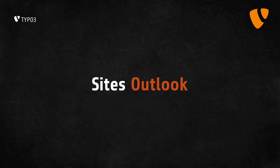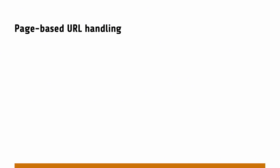Moving on, we have page-based URL handling. Ta-da! So basically what we're talking about is that the page records have a new field called 'URL segment,' and all links use this field or the information stored in that field if it has a value.